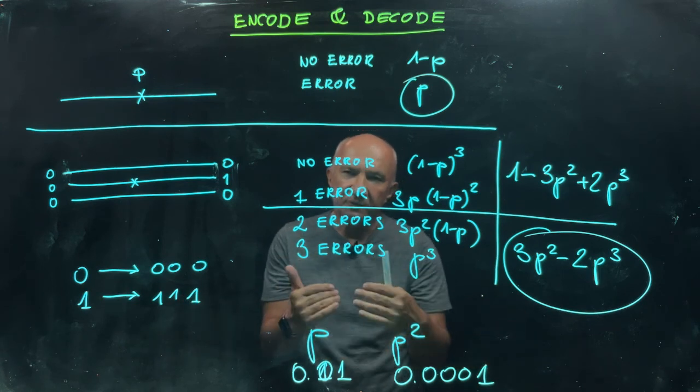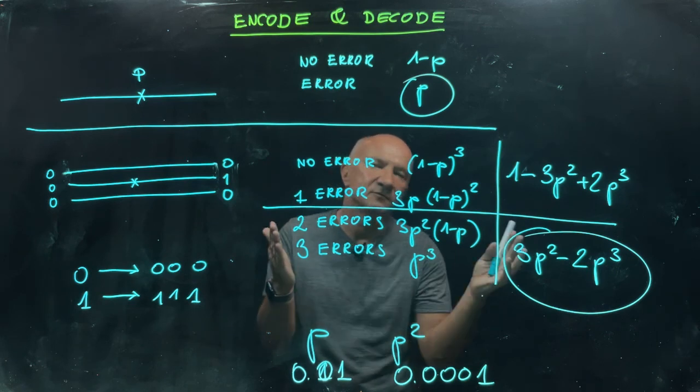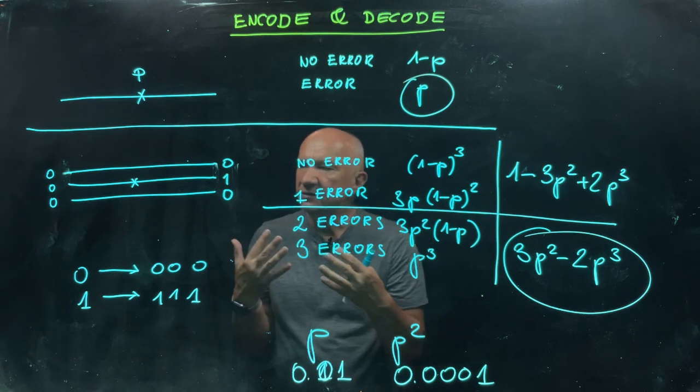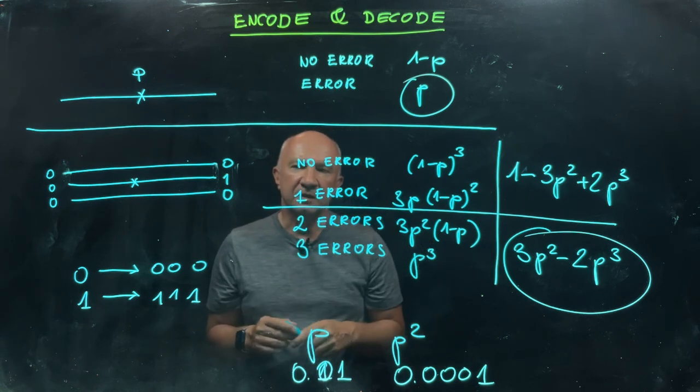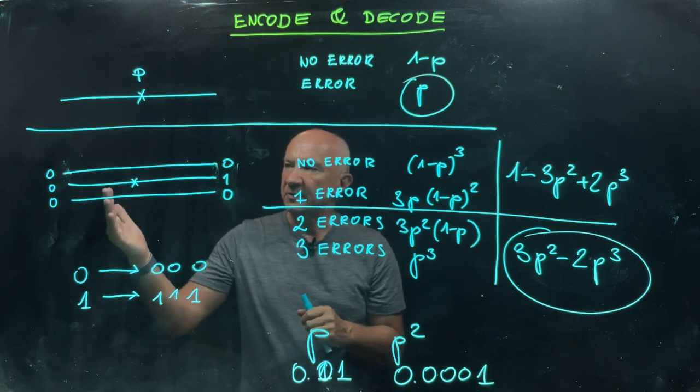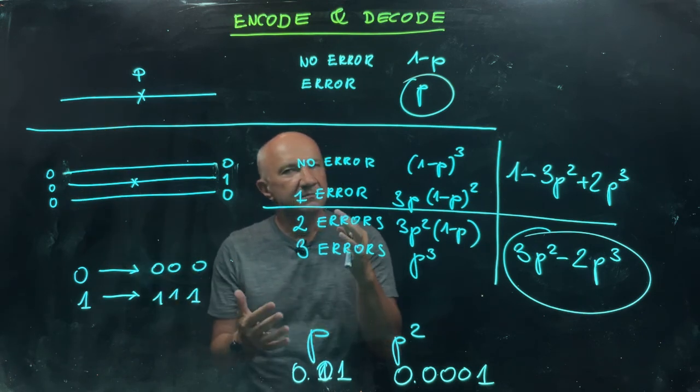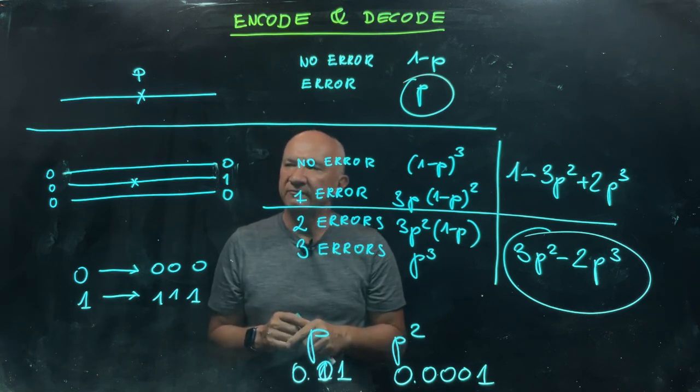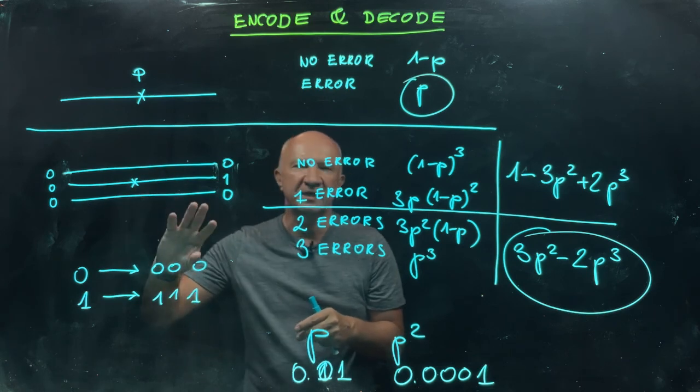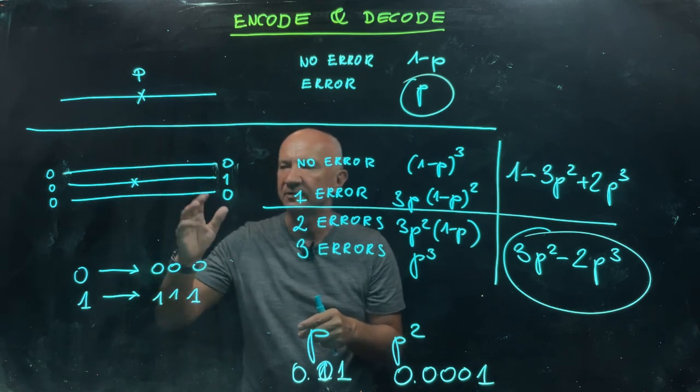That's quite a gain: we reduce the error from p to roughly p², and that's a good thing. We are going to play this game in the quantum domain now. We are going to use a quantum version of the repetition code, but in the quantum case we have to be a little bit more careful—it's more subtle, because it's not just a bit flip that we will have to deal with.